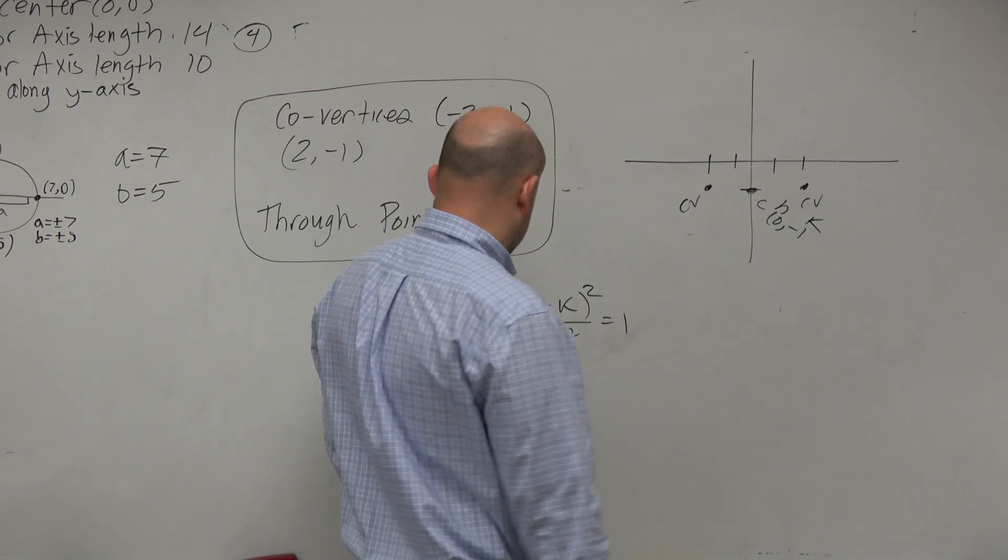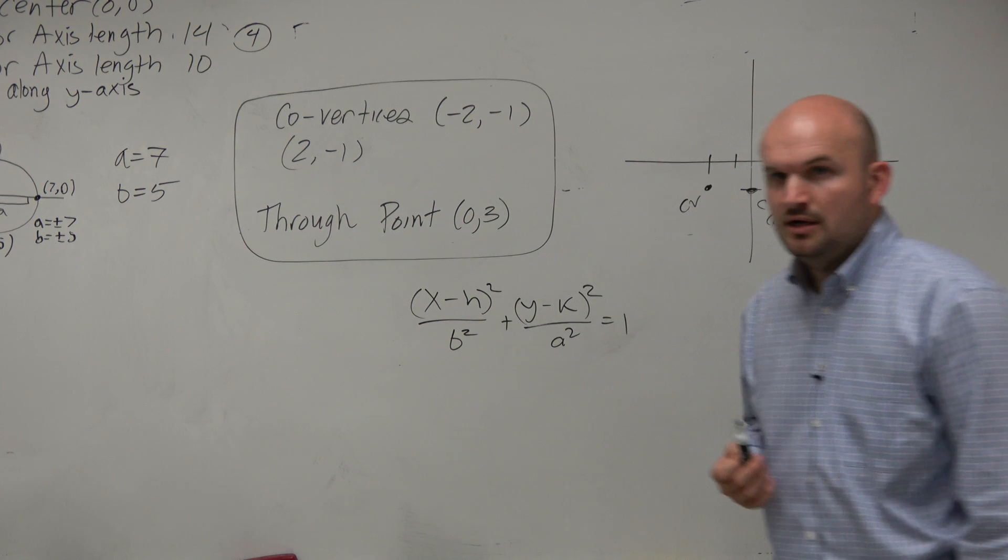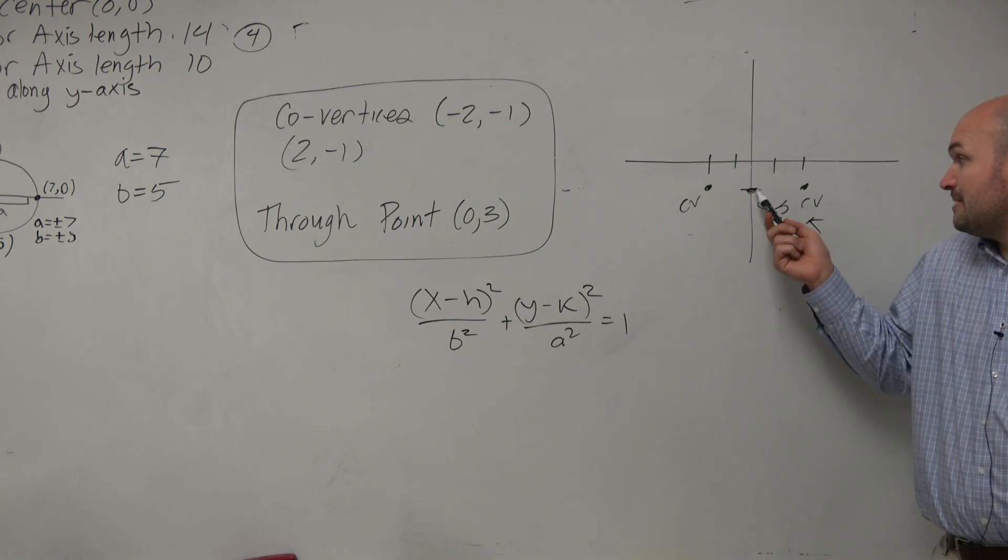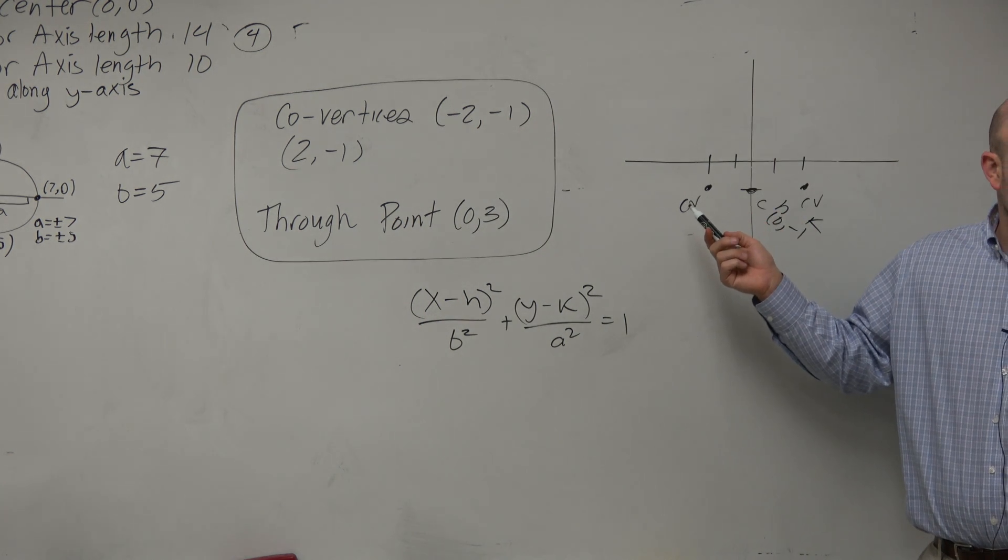And then what else do I need to figure out? I need to figure out a and b. Well, I know that b is a distance from my center to both of my covertices, which is 2.